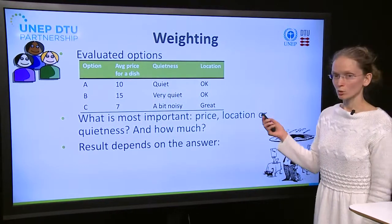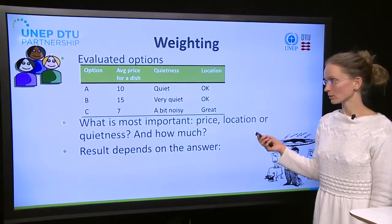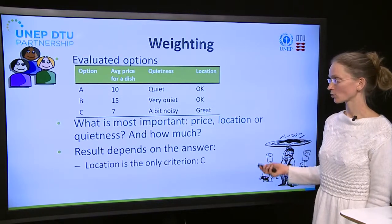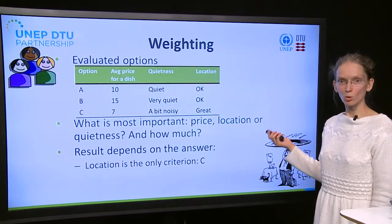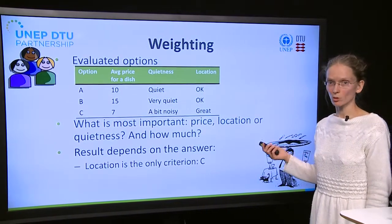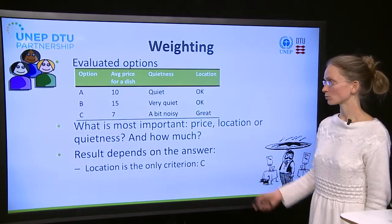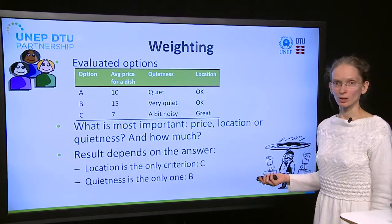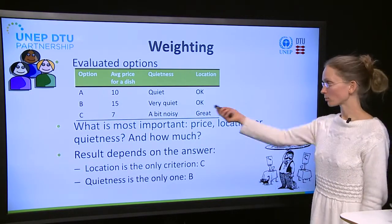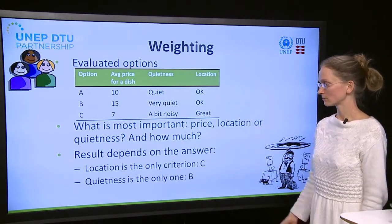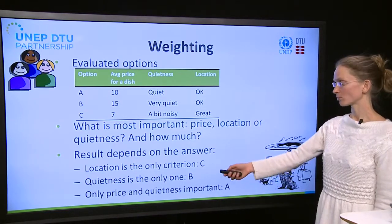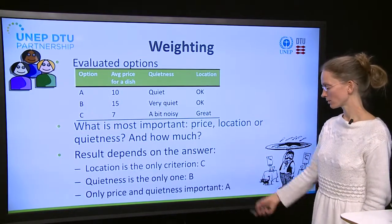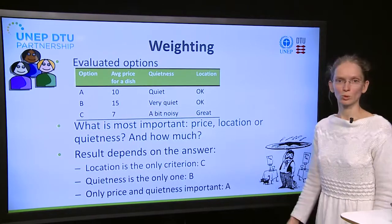The outcome of where they end up going will depend on the answer to that question. So if location is the most important criterion or the only criterion, they are going to end up going to C. If quietness is the only criterion, they are going to go to B. And if price and quietness are important but they skip the location, then they are going to go to A.